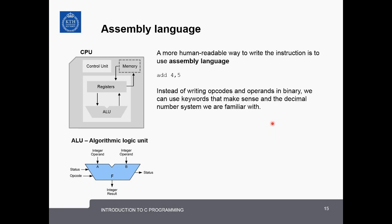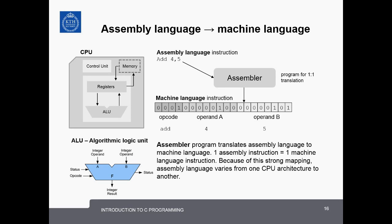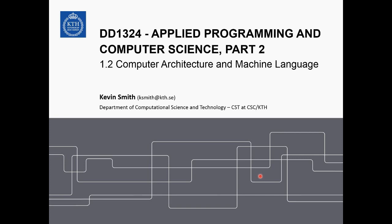A more human readable way to write this instruction is to use assembly language which is just written like this: add 4, 5. Instead of writing the opcodes and the operand in binary we can use keywords that make more sense and the decimal number system that we're familiar with. Assembly language is a first attempt to make code more powerful and readable by humans. For a long time programs were written mostly in assembly language. However, the transistors in a digital circuit can only operate on the machine language itself, the patterns of binary numbers. So what we have is an assembler program which makes one-to-one translations between the assembly language, which is a higher level language, and the machine language instructions. Because of this strong mapping the assembly language varies strongly from one computer architecture to another. That means that the assembly language for one processor is often different than the assembly language for another processor.